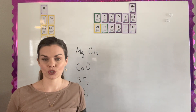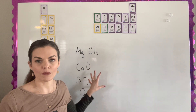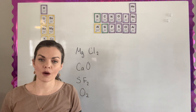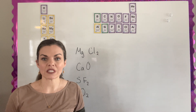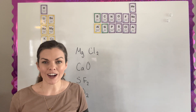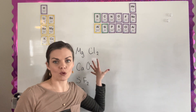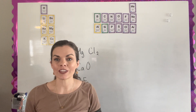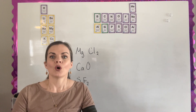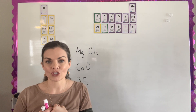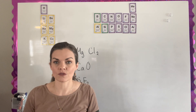Oxidation states are very similar to charges. The only difference is that when we are dealing with compounds, covalent compounds cannot have a charge because they're sharing their electrons equally. So we actually assign an oxidation state to covalent compounds. Essentially, the atom in a covalent compound that pulls electrons to it more will get an oxidation state of negative, even though this is a little different than charges.